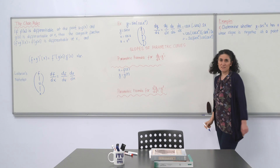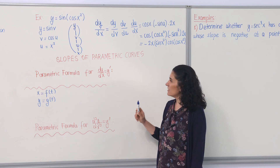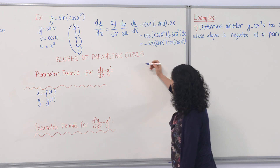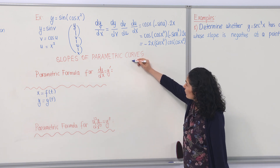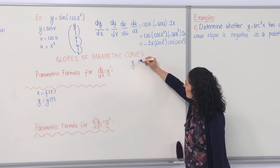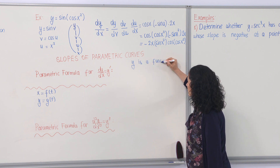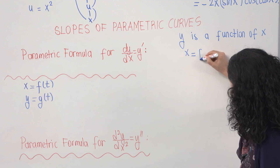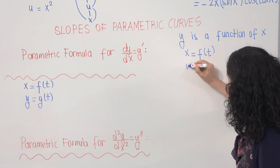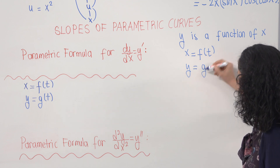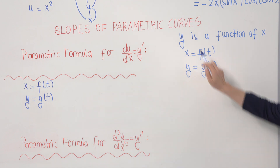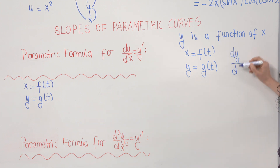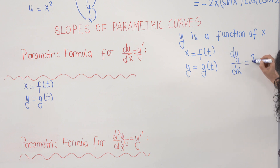The result is minus 2x · sine(x²) · cosine(cos(x²)), which is the answer after applying the chain rule twice. Now let's look at slopes of parametric curves. For a parametric curve, y is a function of x, x is defined by t, and y is defined by t. We are searching for the derivative of y with respect to x.